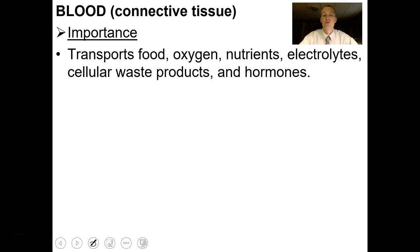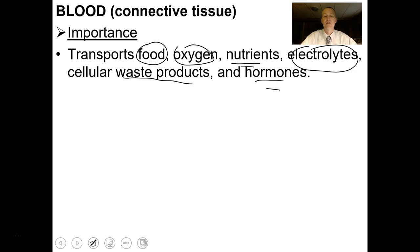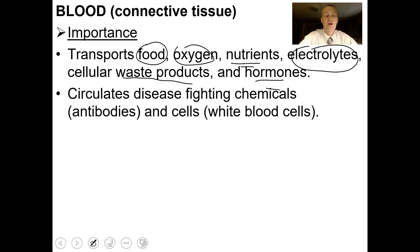Blood transports nutrients, oxygen, electrolytes, cellular waste products like urea and ammonia, and all kinds of hormones that the body creates. It also circulates disease-fighting chemicals. One kind is an antibody — a protein that white blood cells make that will stick to and target bacteria, viruses, and various things that come into the body.